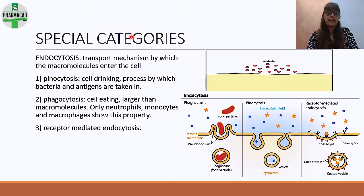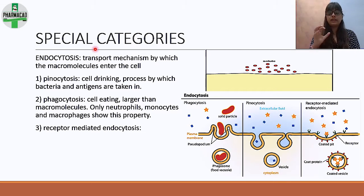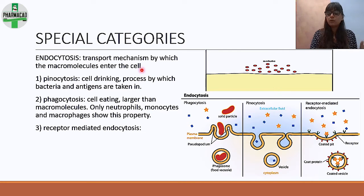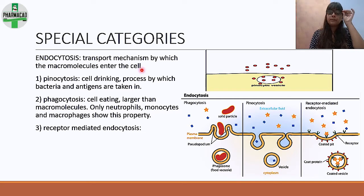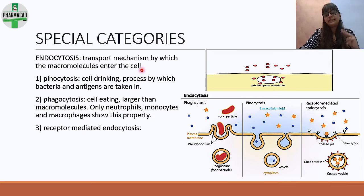Now for special categories of transport — these are not simple channels; they have more complexity. The first is endocytosis, a transport mechanism by which macromolecules enter the cell. While simple channels handle micro-molecules like sodium, potassium, calcium, and glucose, macromolecules require their own special categories. Endocytosis has three subtypes.